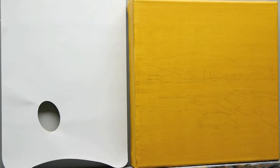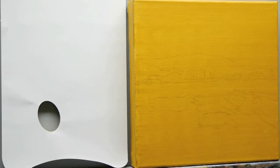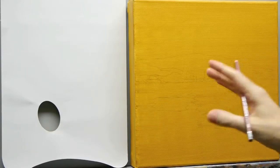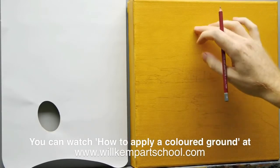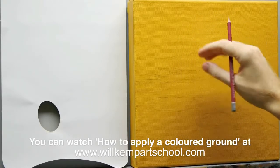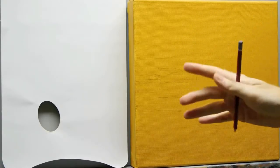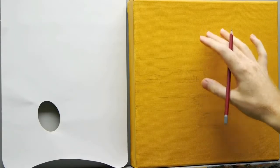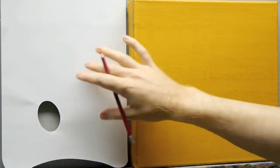This is part one in this free impressionistic landscape lesson showing you how to paint in a style similar to how Monet painted. So the first thing we've got is a colored ground. A colored ground is just when you've painted over the initial white or the initial raw canvas just so you've got a color to work on top of rather than just painting on top of white.